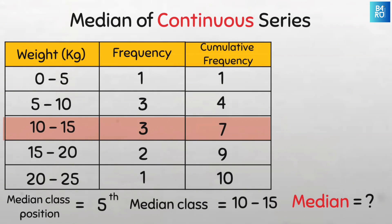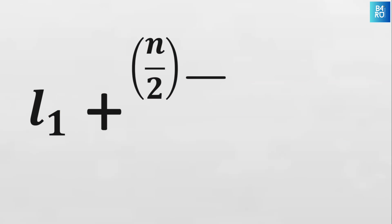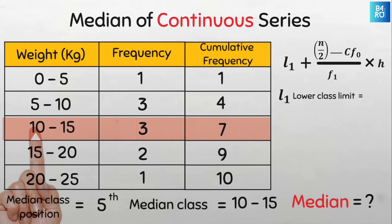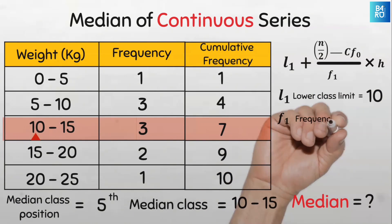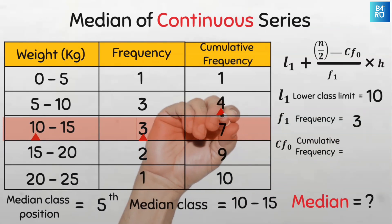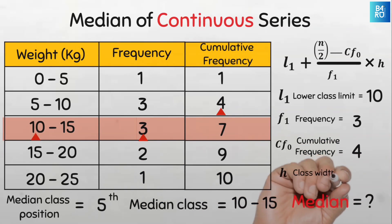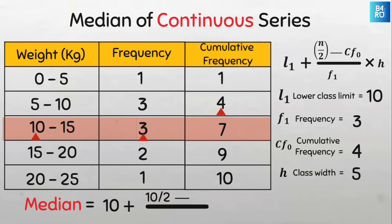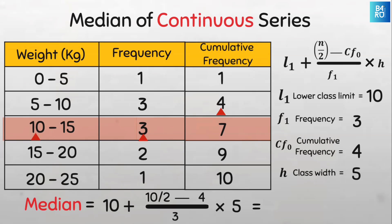To find the median value, we use the formula: L1 + [(N/2 − Cf0) / F1] × H. Where L1 is the lower class limit of the median class = 10; F1 is the frequency of the median class = 3; Cf0 is the cumulative frequency of the class preceding the median class = 4; and H is the width of the median class = 10 − 5 = 5. So our median is 10 + [(10/2 − 4) / 3] × 5 = 10 + [1/3] × 5 = 10 + 1.67 = 11.67 kilograms.